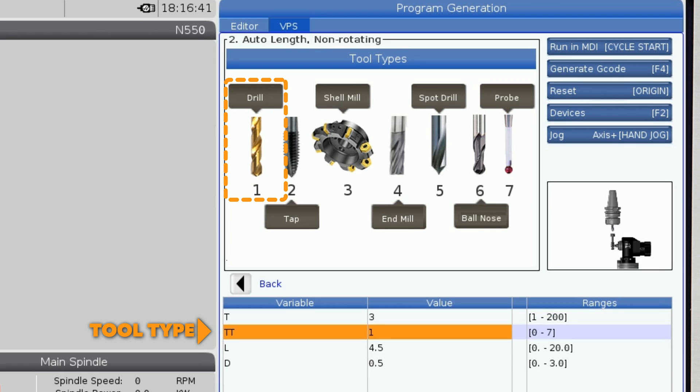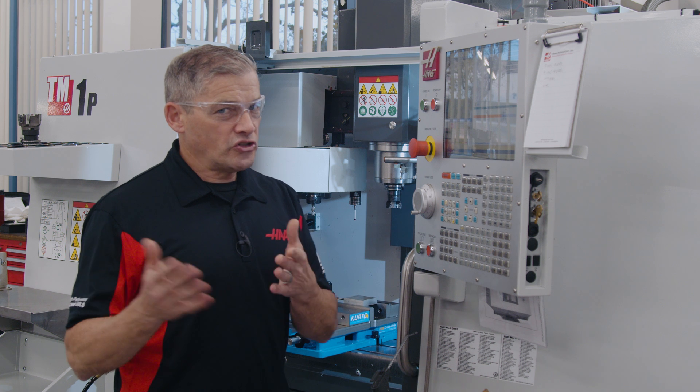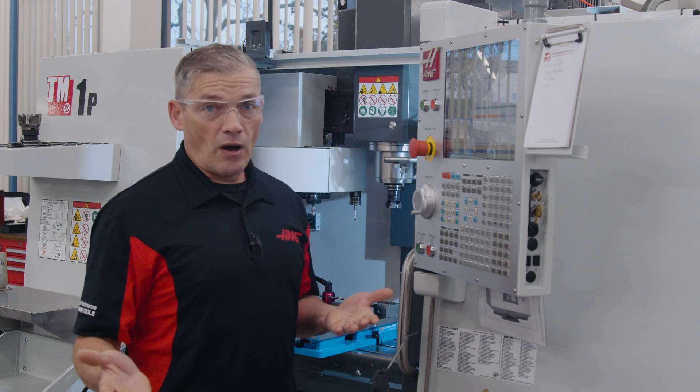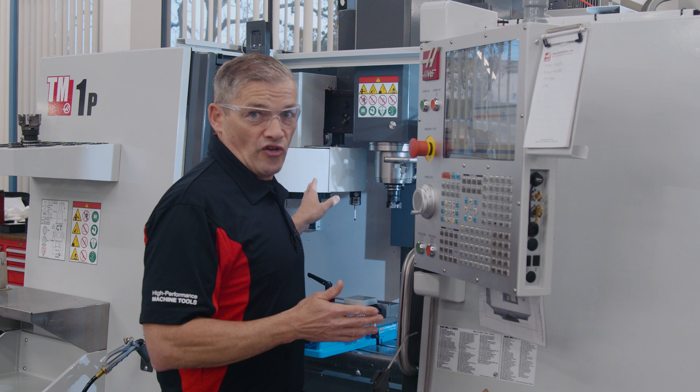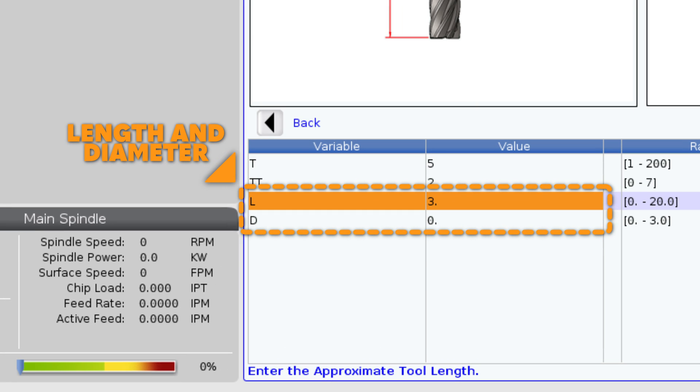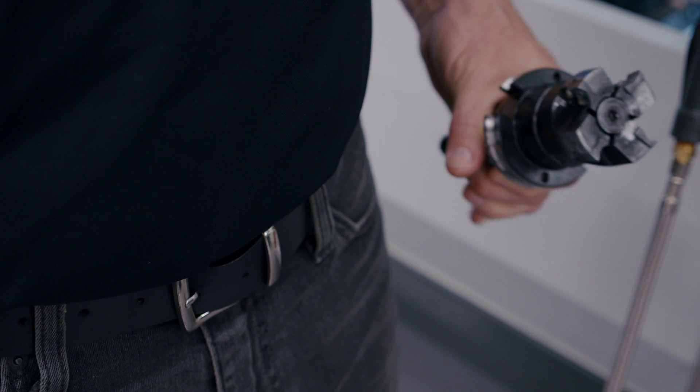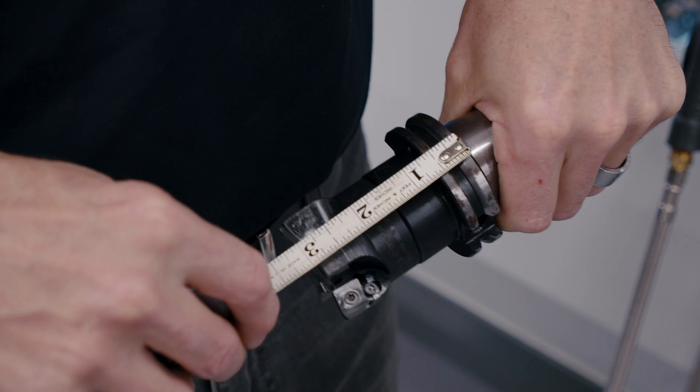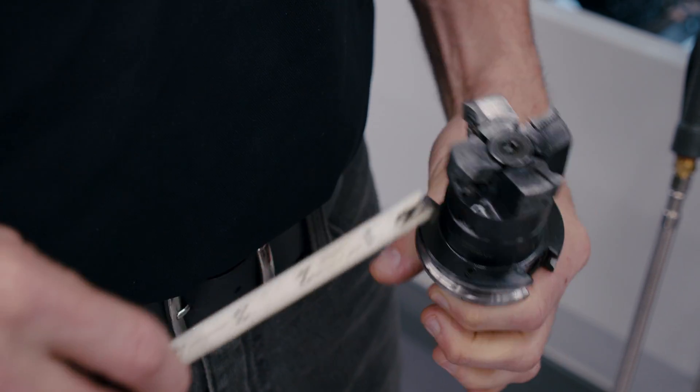Now if you want, you can measure and enter the tool's approximate length and diameter. But you don't really need to. Eyeballing it from where I'm standing works fine. I'll enter three inches and I'll leave the diameter at zero. This saves me a few seconds making a measurement or trying to remember where I last set down my scale or tape measure.